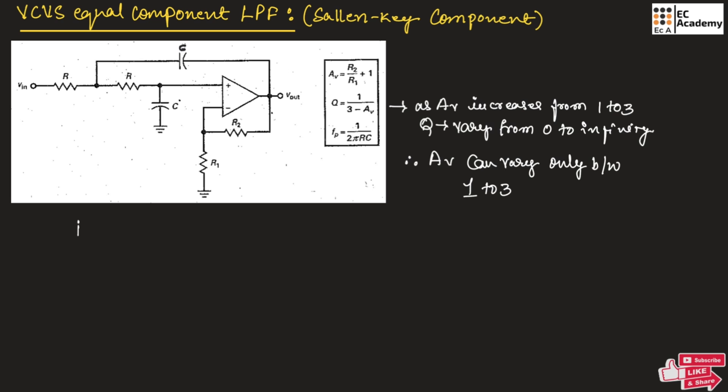For a Butterworth filter, Q should be equal to 0.707 and Kc should be equal to 1.